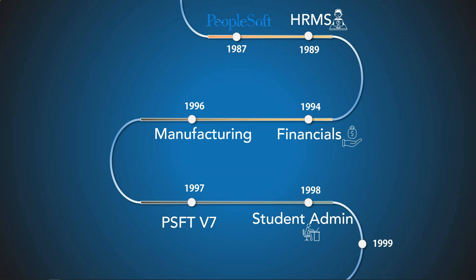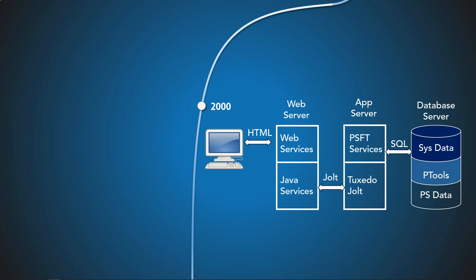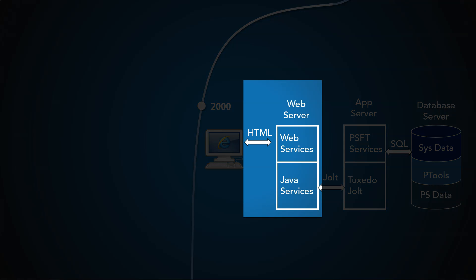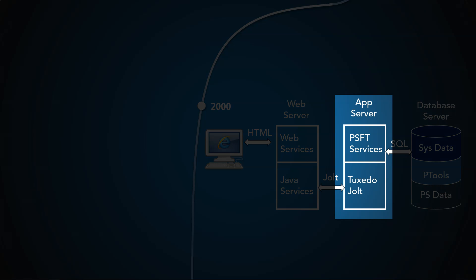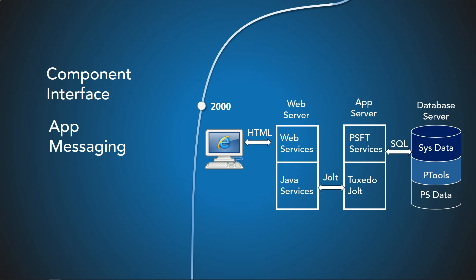In 1999, Craig Conway was named CEO of PeopleSoft, replacing David Duffield. In the year 2000, with the Internet revolution just starting, PeopleSoft jumped on the bandwagon and released version 8 to leverage Internet capabilities. With just an Internet connection, you can access the PeopleSoft application anywhere in the world. An additional web tier was added to deliver HTML content to the browser, and the App Server introduced in version 7.5 manages communication between the web server and database server. New tools were also released — component interface, app messaging, and an enhanced app engine — making it easy to integrate PeopleSoft with other applications.